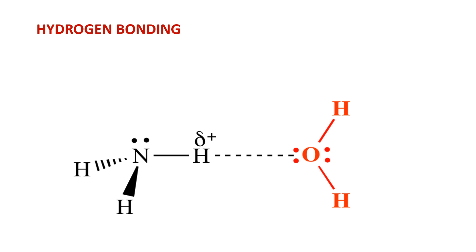In water, hydrogen bonding causes linkages in the water molecules which results in the boiling point of water being higher than that of other compounds. Similarly, ethanol has a higher boiling point than diethyl ether because there is hydrogen bonding in ethanol.